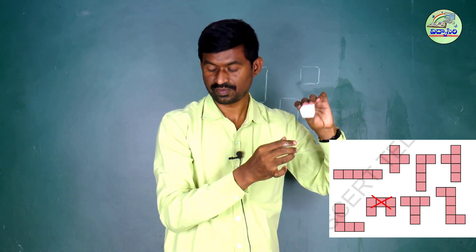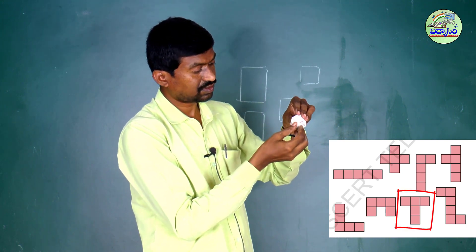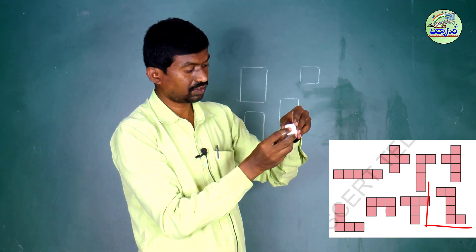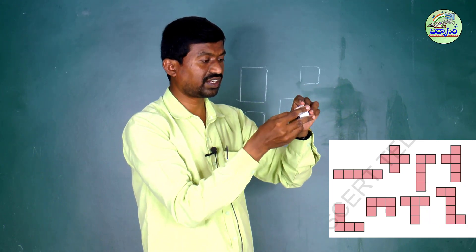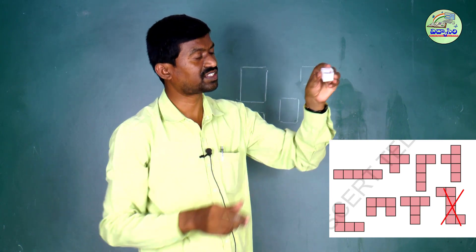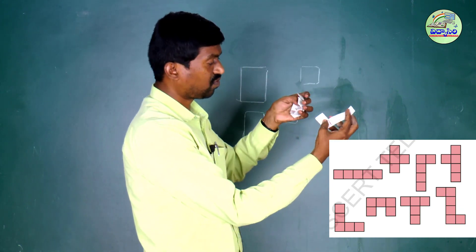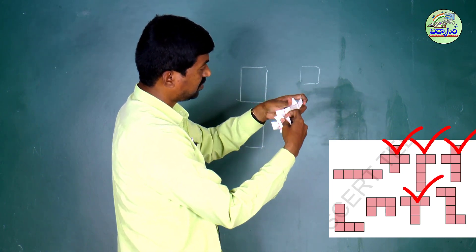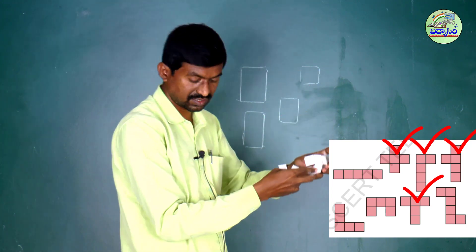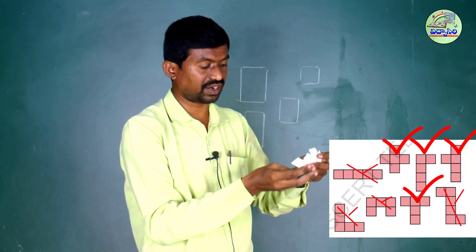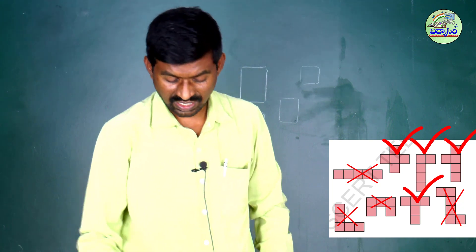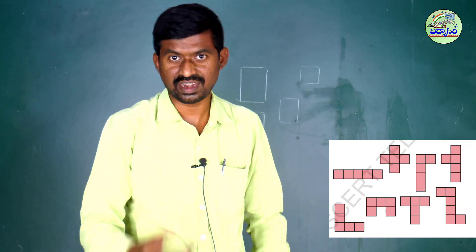This one is also not making an open box. Next, another one — see, this one also makes an open box. This one is not coming as an open box — it is a closed box, so it is not possible. Nets one, two, three, and four can be used to make the box. Thank you, children.